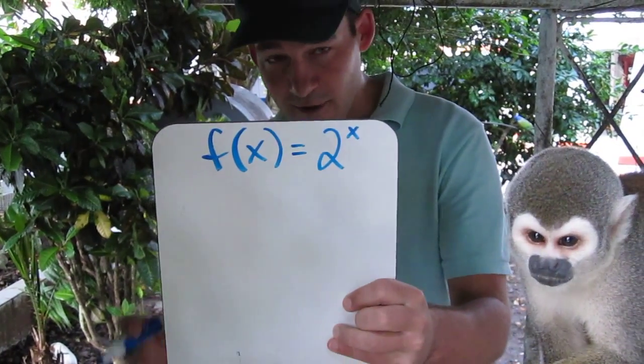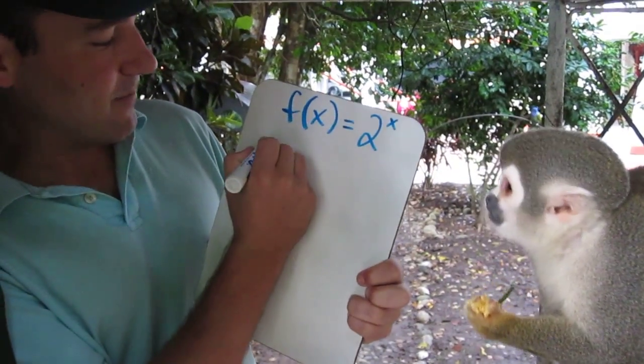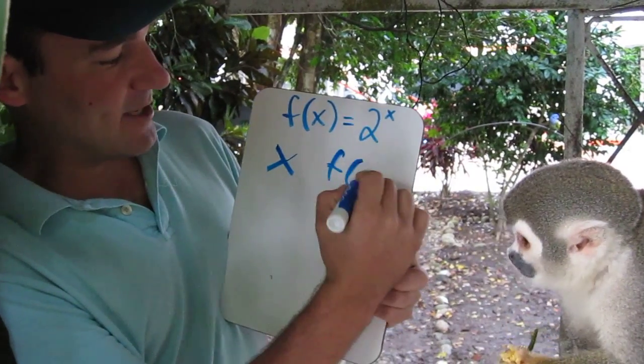Now anytime we have a new function, it's sometimes helpful to plug in values to see what the function looks like. So let's do that. We'll make an x f of x table.